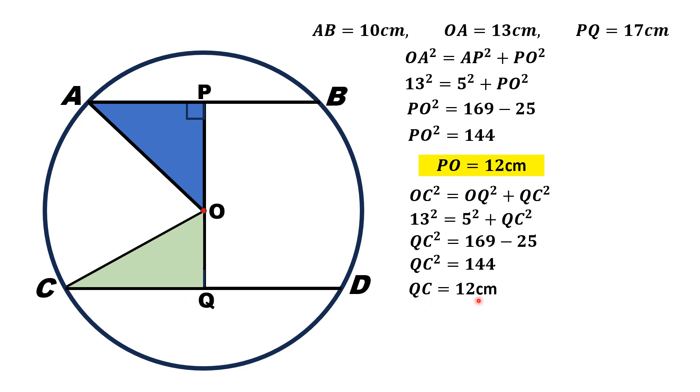Since QC is equal to 12 cm, it means CD is double of CQ, which is equal to 24 cm. Thus, the length of chord CD is 24 cm. That is the answer.